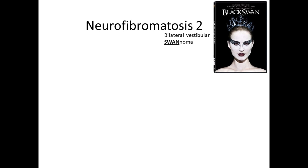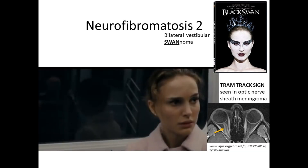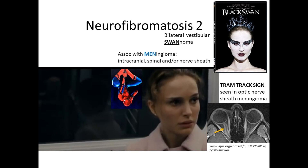Next is neurofibromatosis 2, also known as multiple inherited schwannomas, meningiomas, and ependymomas — MISME. This can be remembered with the Black Swan, as NF2 is associated with bilateral vestibular schwannomas. There's a scene in the movie where the main character sits in a train — this helps you remember tram tracks on MRI for optic nerve sheath meningioma. With NF2, you can see all types of meningiomas: optic nerve sheath, intracranial, and spinal.